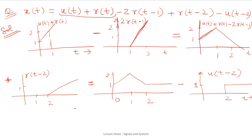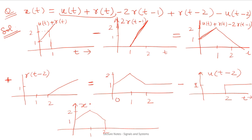Drawing the resultant signal: you get a waveform where this is 1, this is 2, this is 1, this is 2. This is your final answer — this is x(t) which is being asked in the problem. You might have got the idea that by drawing intermediate signals and then adding or subtracting them together, you can obtain the resultant signal.